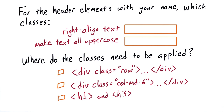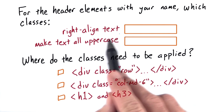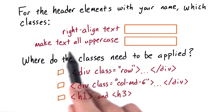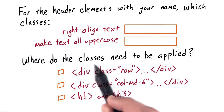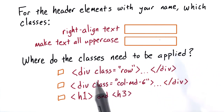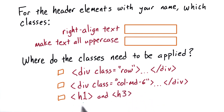This is a two-part question. In the first part, pick the classes that you need to align text and make text all uppercase. For the second part of this question, which of these elements need the classes that you've defined up here? Div class equals row, div class equals column medium six, or is it the h1 header and h3 header? Check all that apply.